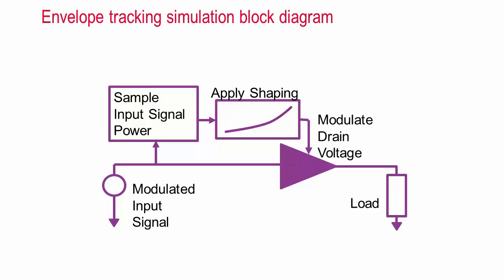This is a simple block diagram that illustrates an envelope tracking simulation setup. Note that the block diagram for a real envelope tracking system would be more complicated and would include baseband I and Q generation, an up converter, and an envelope tracking power supply.